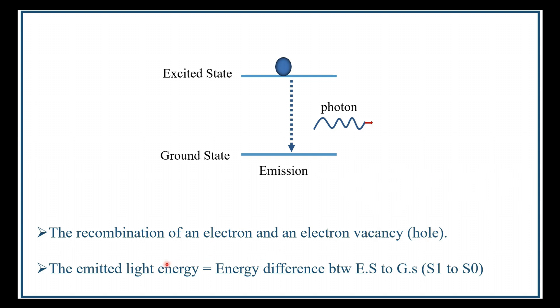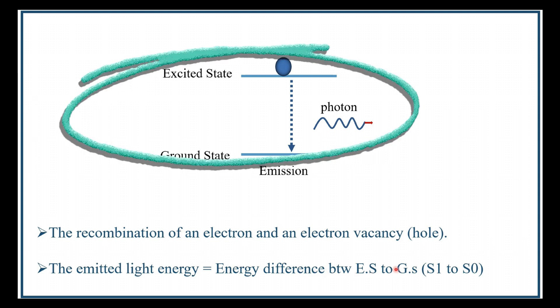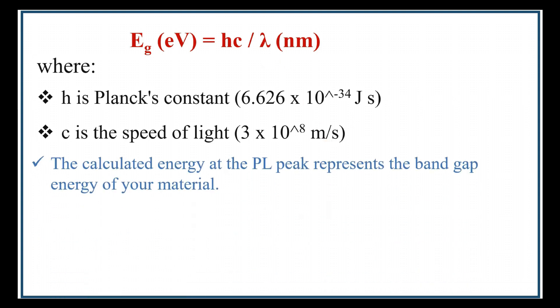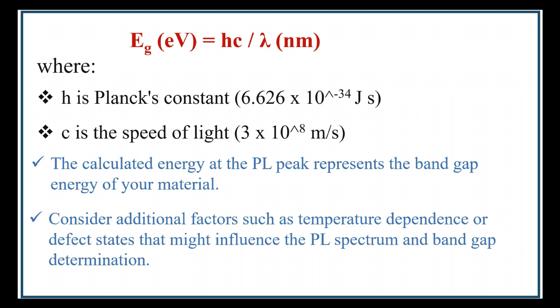The emitted light corresponds to the energy difference between the ground state and excited state, or from S1 to S0. This energy difference can be calculated by the photon energy equation, Eg equals hc divided by lambda. Eg is the bandgap in electron volts, h is Planck's constant (6.626 × 10^-34 joule seconds), c is the speed of light (3 × 10^8 meters per second), and lambda is the wavelength. The calculated energy at the PL peak represents the bandgap energy of your material. Consider additional factors such as temperature dependence or defect states that might influence the PL spectrum and bandgap determination.